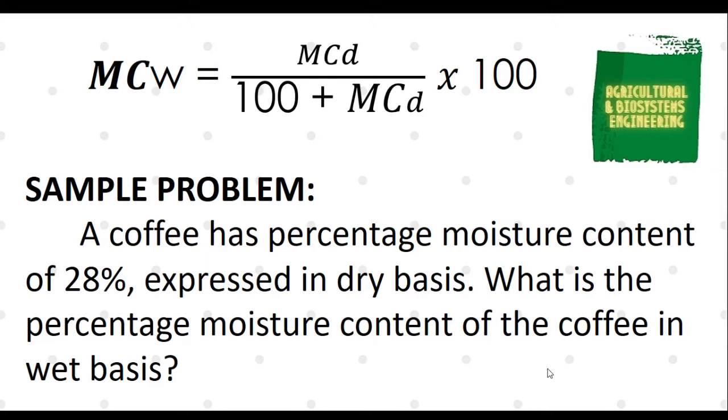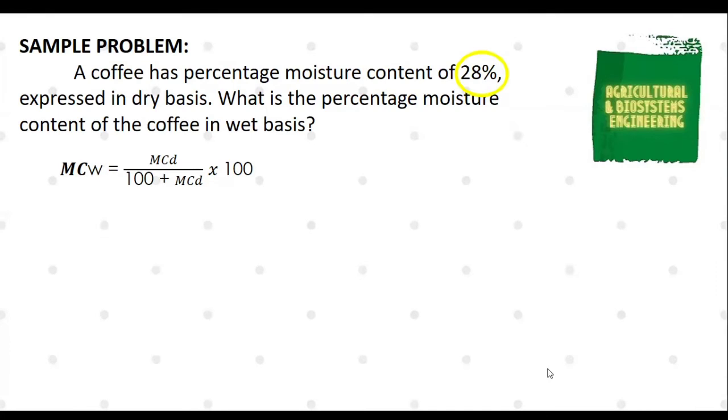The value for Moisture Content Dry Basis is the only given, which is 28%. With this value, we can now solve the problem. We directly substitute it to the formula. We now have 28 all over 100 plus 28, multiplied by 100.